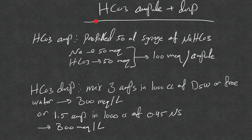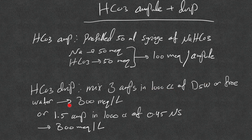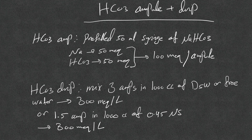A bicarb ampoule (push) is a pre-filled 50 mL syringe of sodium bicarbonate containing 50 mEq sodium and 50 mEq bicarb — 100 mEq per ampoule. It is very hypertonic. For a drip, mix three ampoules in 1000 cc of D5W or free water to get approximately 300 mEq/L — close to isotonic. Alternatively, mix 1.5 ampoules in 1000 cc of half-normal saline to get 300 mEq/L.